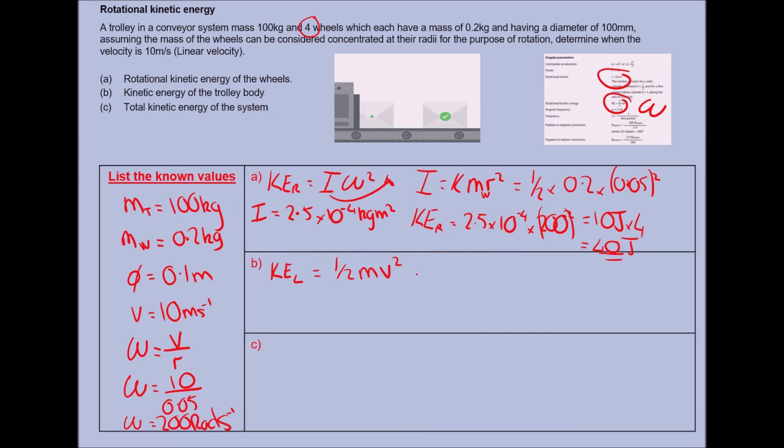Next bit, kinetic energy of the trolley body. This is the linear kinetic energy this time. Checking your formula sheets, half MV squared. I've got my V which is 10, I've got my M which is the trolley.